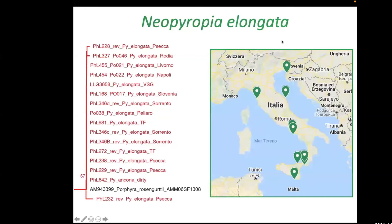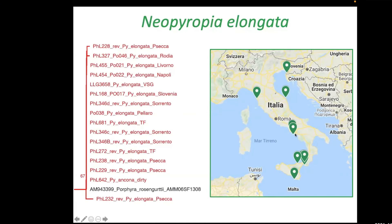Neoporphyra elongata is the most common Bangiaceae — formerly classified as Pyropia or Porphyra — in Italy. It is very important to note that without molecular tools, this species was frequently recorded, but was never distinguished from Porphyra leucosticta. What was traditionally identified as Porphyra leucosticta is now understood to be Neoporphyra elongata.